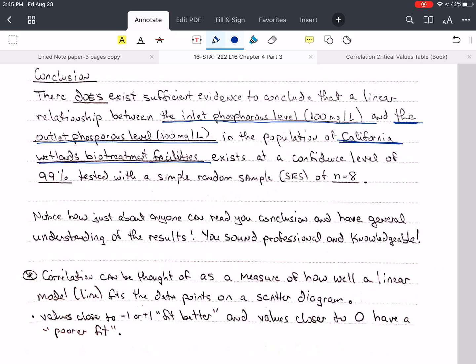So let's read it again. There does exist sufficient evidence to conclude that a linear relationship between the inlet and outlet phosphorus levels in the population of California wetlands biotreatment facilities exist at a confidence level of 99%. Where did I get that? Well, alpha is 0.01. 1 minus alpha is 0.99. And that's the same thing as 99%.